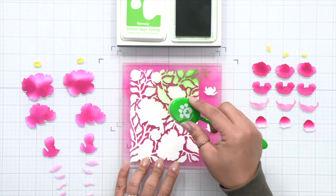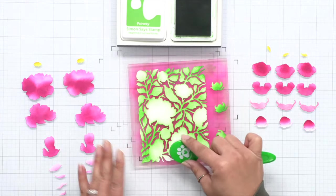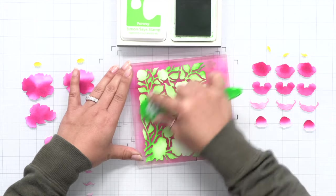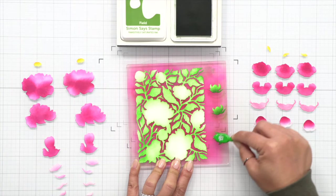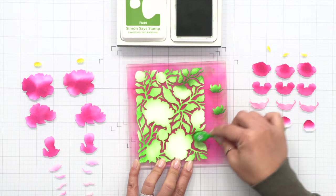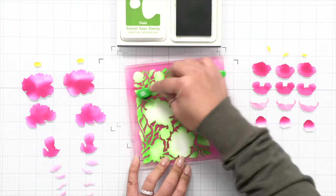For the main die from this set, which is the bold background, I'm ink blending the foliage with two colors of green again. I'm using a more vibrant green this time for this card. But as always, I use more than one color to make sure there's more depth and dimension to the ink blending.